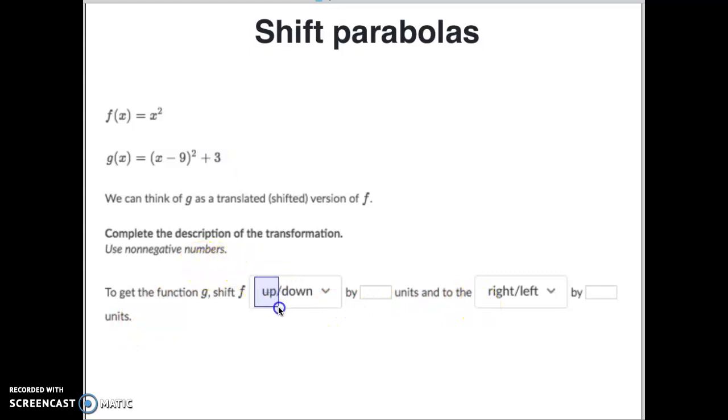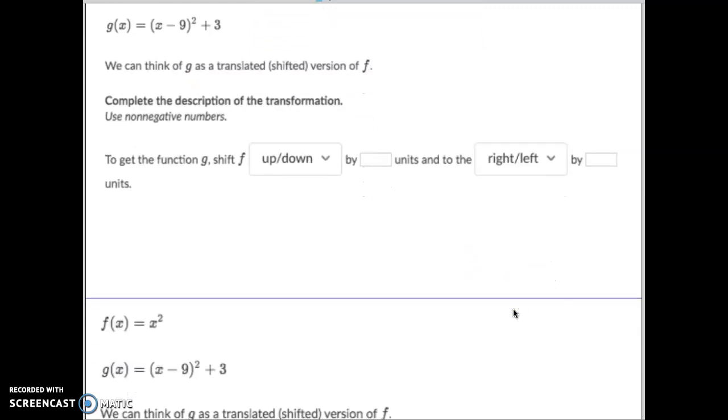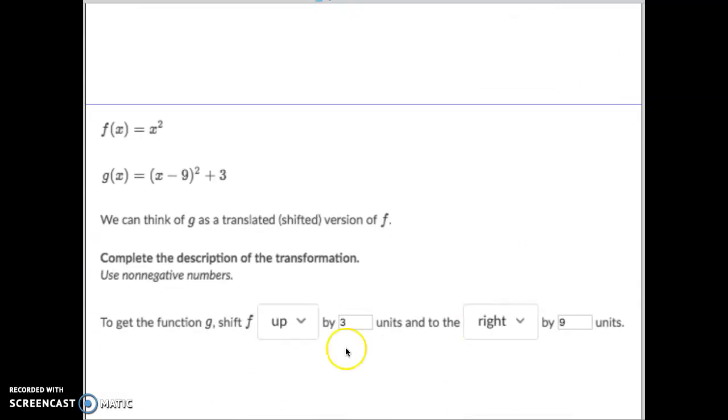And that's going to shift it up 3. So when we get to this one right here, when we're filling this one in, we're going to go up because of the positive 3 right there. And it's going to go up 3 units. And then because this is a negative, we do the opposite, going to the positive side, which moving positive would be right by 9 units. So your answer would look like this. You're going up 3 units because of this one. And then you're going to the right 9 units because of this one.